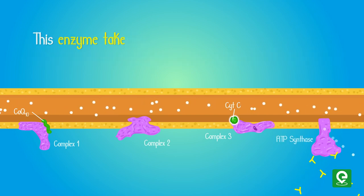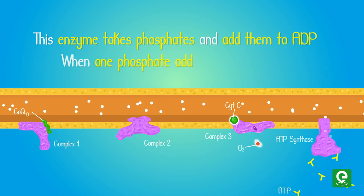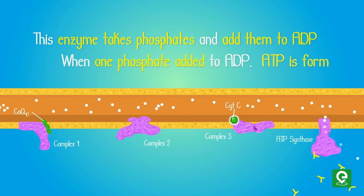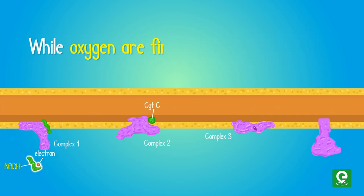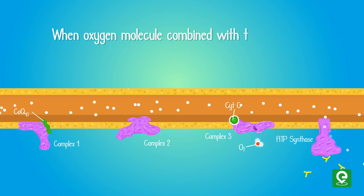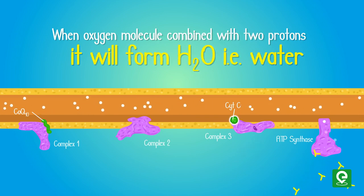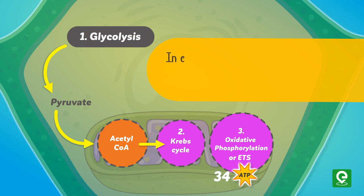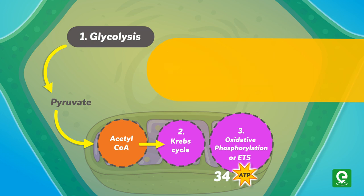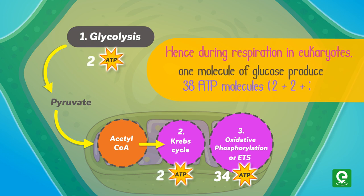ATP synthase takes phosphates and adds them to ADP. When phosphate is added to ADP, ATP is formed. Oxygen is the final acceptor of electrons — when an oxygen molecule combines with two protons, it forms H2O, that is water. In the electron transport chain, 34 ATP molecules are formed. Hence, during respiration in eukaryotes, one molecule of glucose produces 38 ATP molecules.